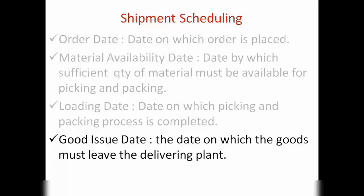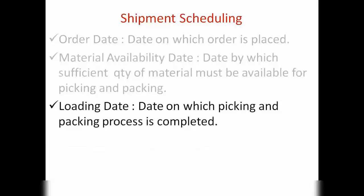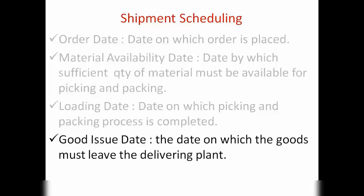Then we have goods issue date. So now the material was available and we have done the picking and packing — the goods are ready to be shipped to the customer within their packings. Goods issue date is the date after the loading date on which the goods must leave the delivering plant, so that they can reach the customer on time.